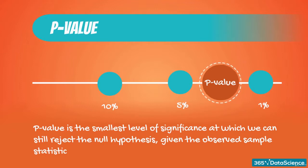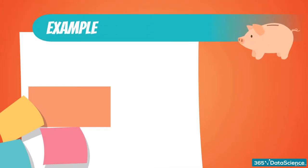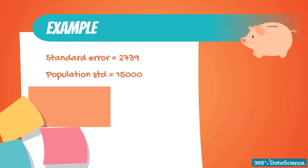So how do we do that? Recall the test with the data scientist salary. We had a standard error of 2739, known population standard deviation of 15,000, normally distributed population, and a sample size of 30. The corresponding z-score was minus 4.67.